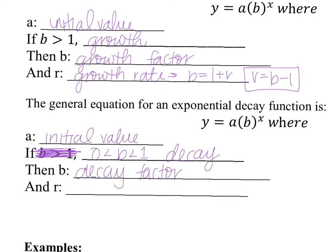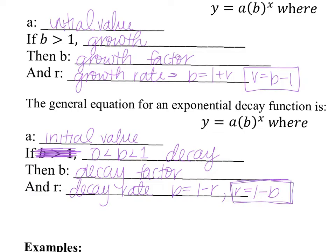Now, to get the decay rate r, instead of 1 plus r, it's going to be 1 minus r. So b equals 1 minus r. To find your decay rate, r actually equals 1 minus b. To find your growth rate, that's b minus 1.